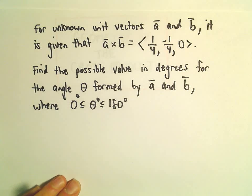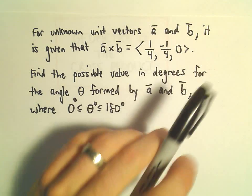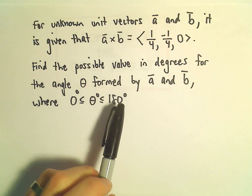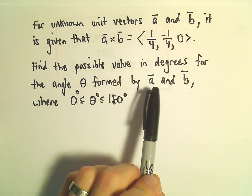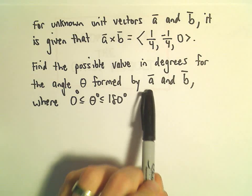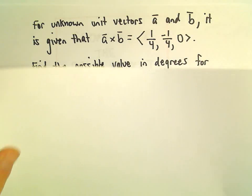In this example we have two unknown unit vectors, a and b. We know that the cross product has components one-fourth, negative one-fourth, zero. We want to find the possible value in degrees for the angle theta formed by vectors a and b, where theta is between zero and 180 degrees.